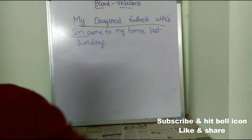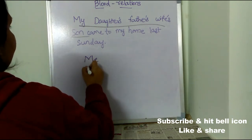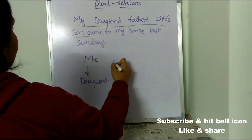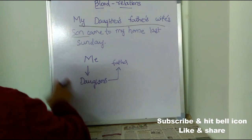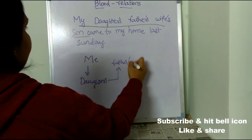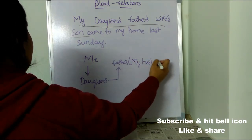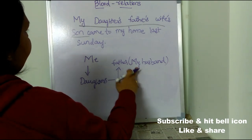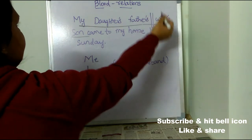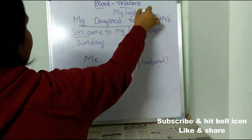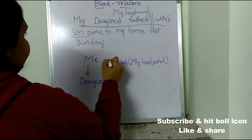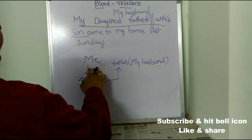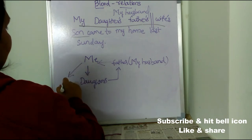My daughter — that is me. My daughter's father — who is my daughter's father? My husband. My husband's wife — who is my husband's wife? Me. Wife's son — who is wife? Me. So my son.